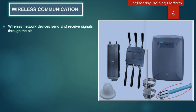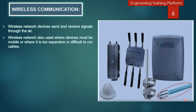Now I'd like to share information about wireless communication. These are the wireless communication devices, and this is the R-Coax cable which we use for communication. Wireless network devices send and receive signals through the air. Wireless networks are used where devices must be mobile, or where it is too expensive or difficult to run cables.